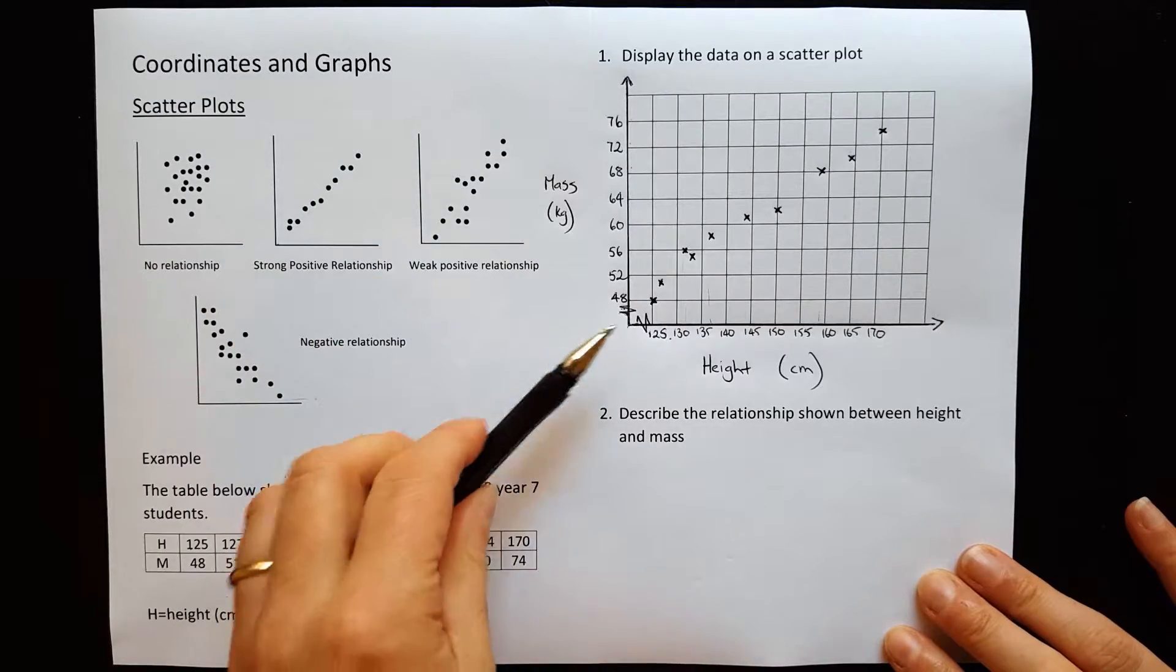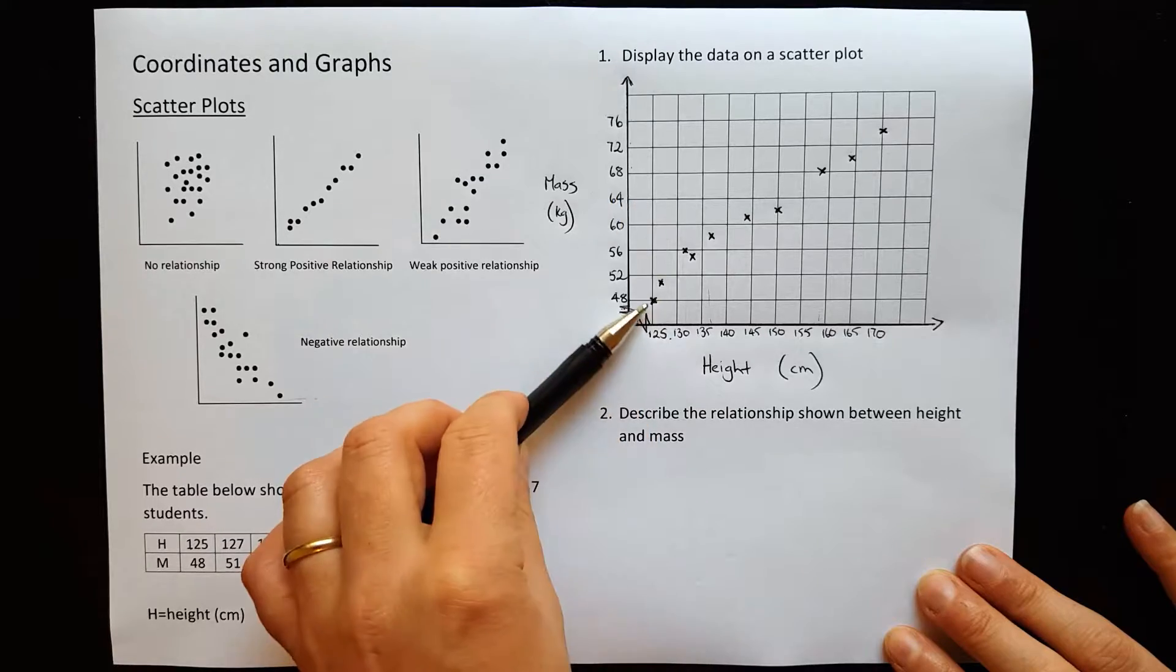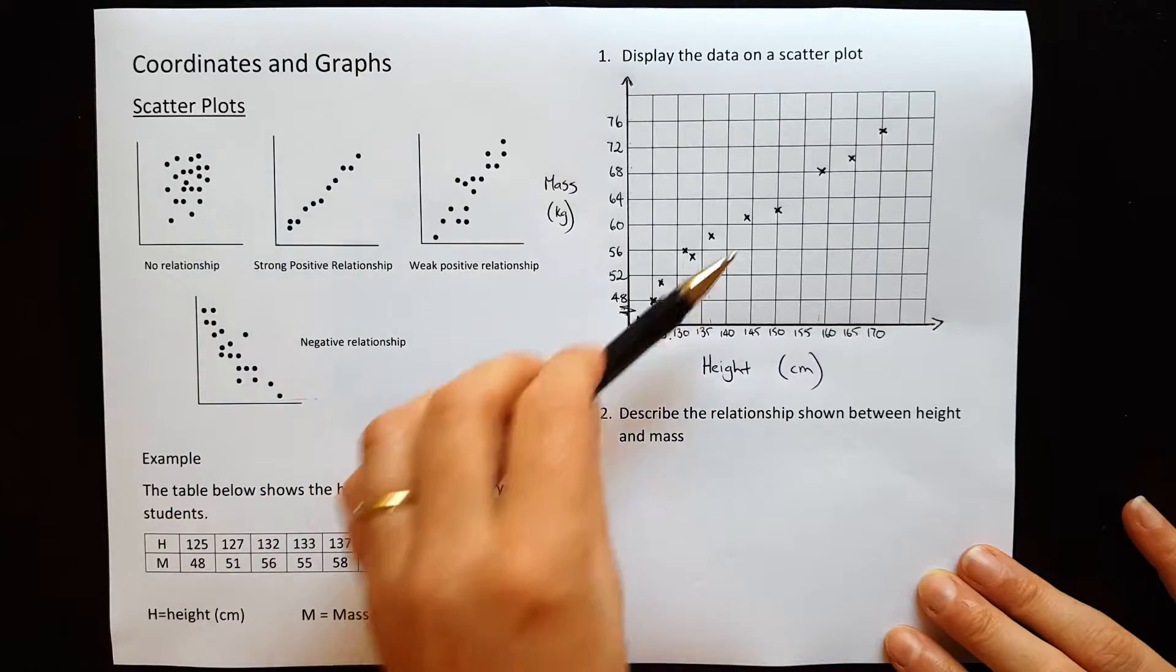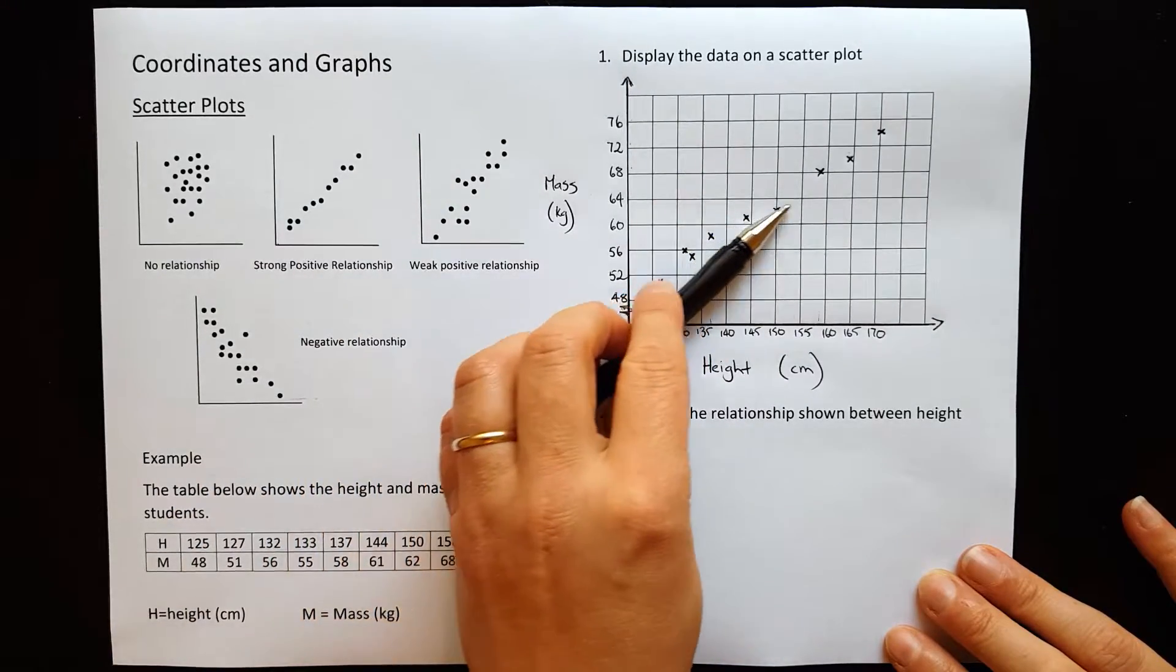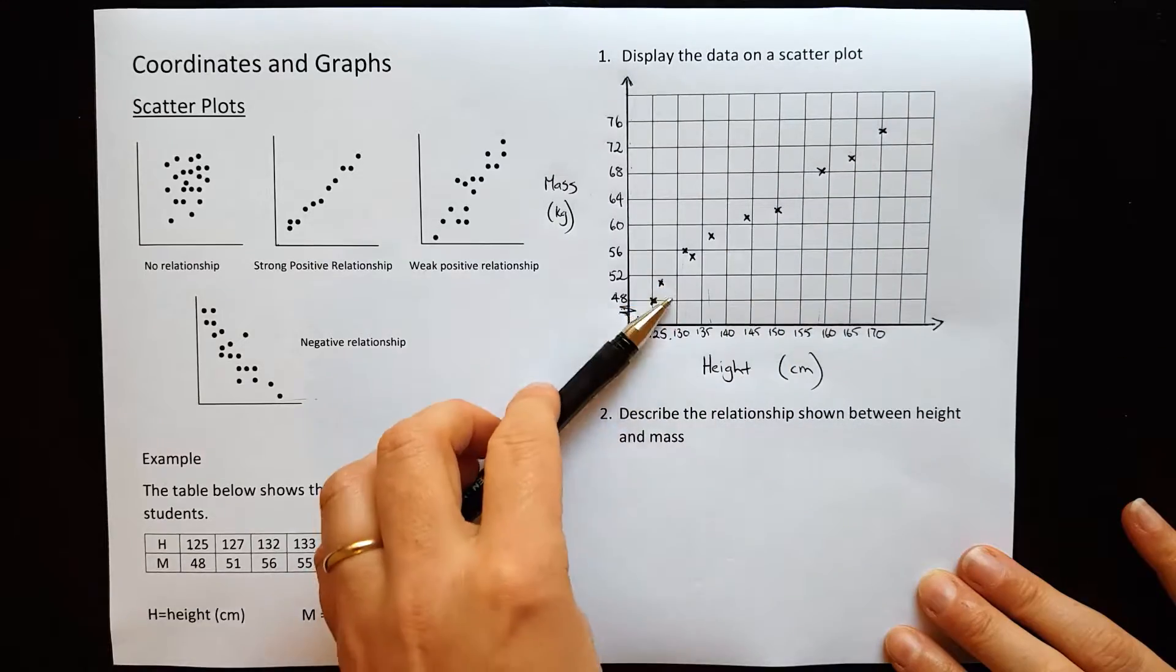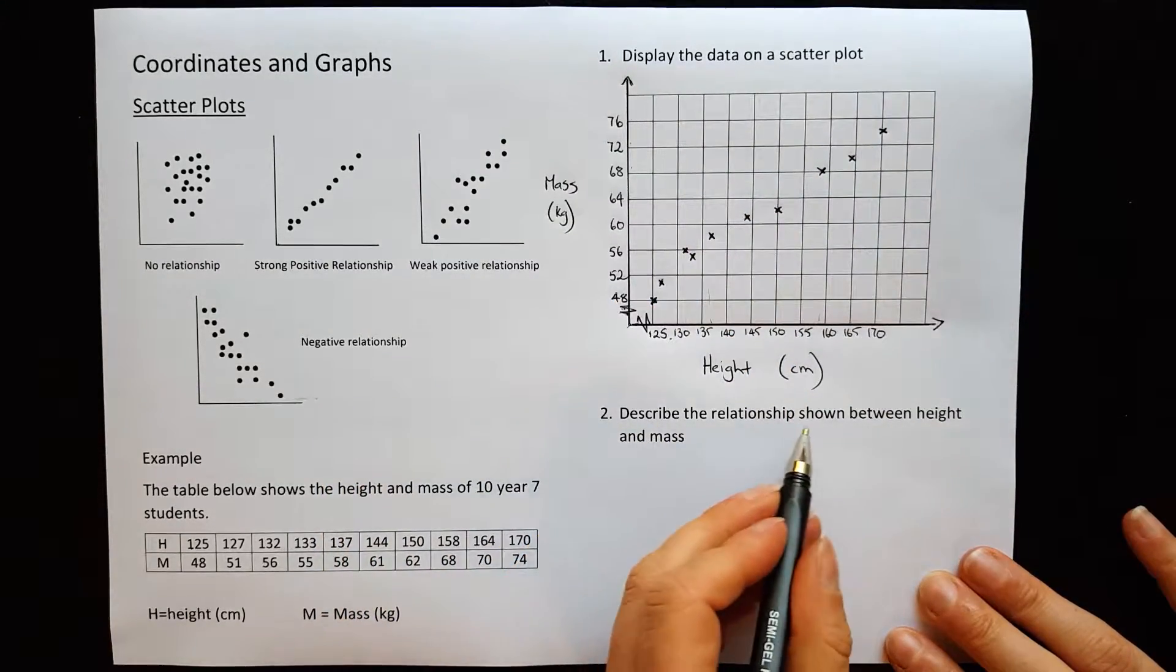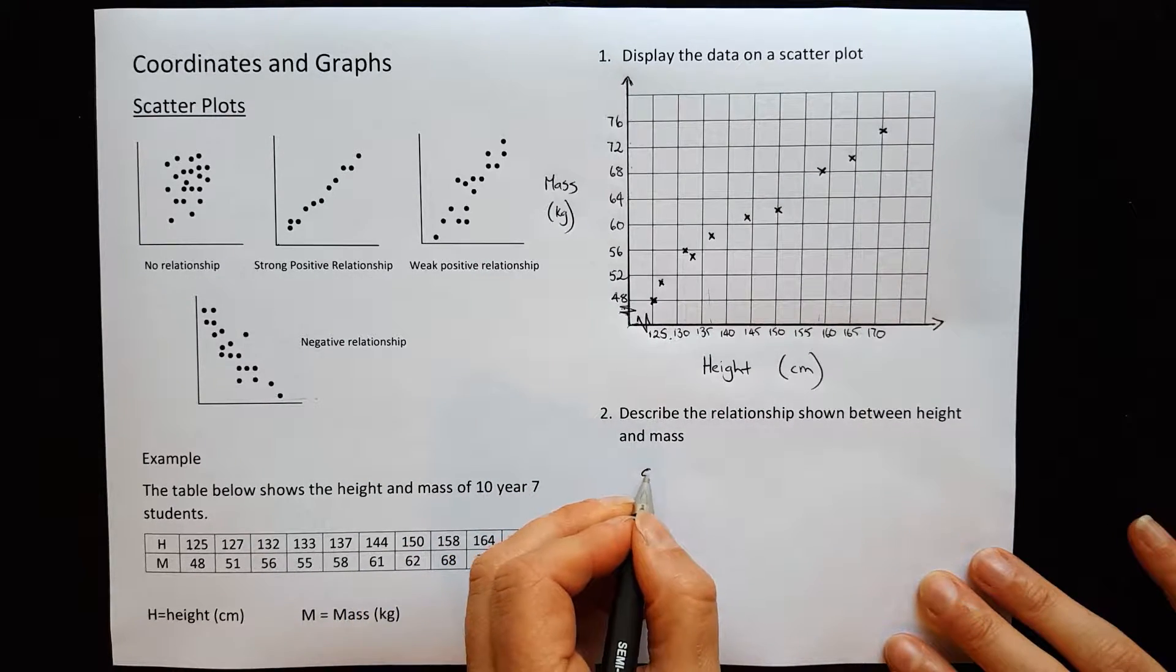So we can see that as height is increasing, the weight generally is increasing as well. So that would be a positive relationship. And it's actually a fairly strong relationship there. It's not too widely spread out. So I would describe that relationship as being a strong positive relationship.